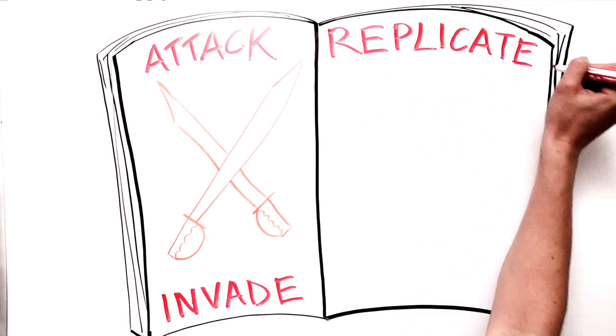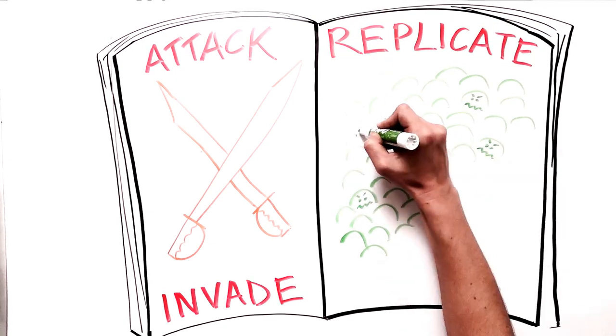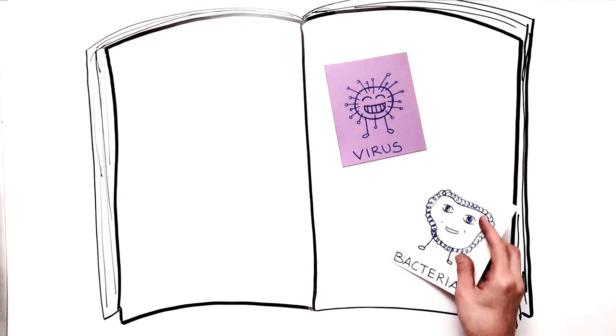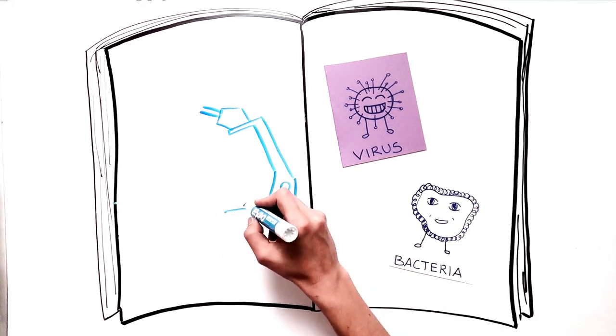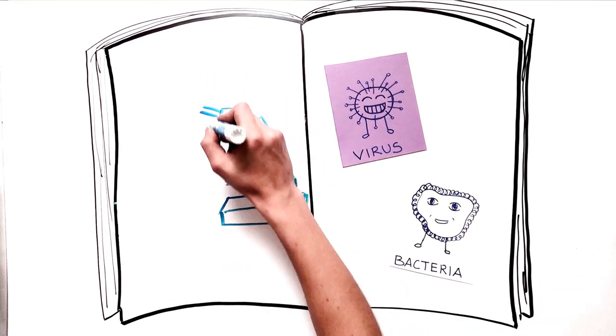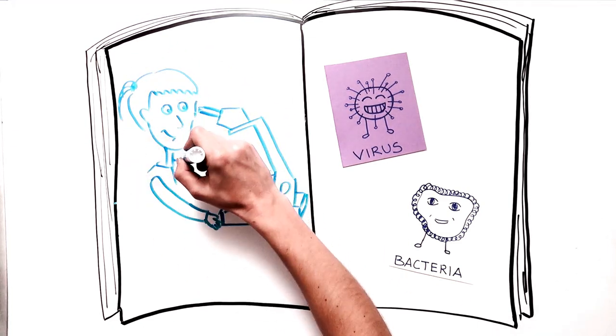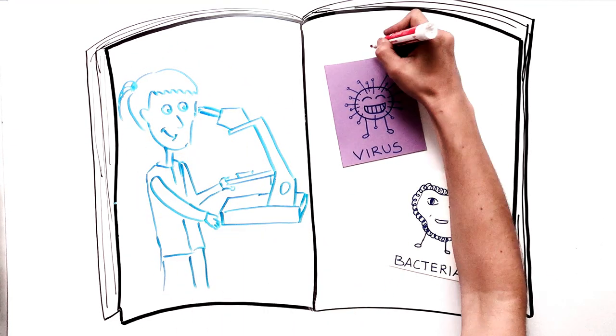They achieve their goal by attacking, invading, and replicating inside your body, damaging our healthy cells. In this video, we'll focus our attention on viruses and bacteria, how your body's immune system defends against these invaders, and how we can help train our immune system to prepare it to prevent future infections.